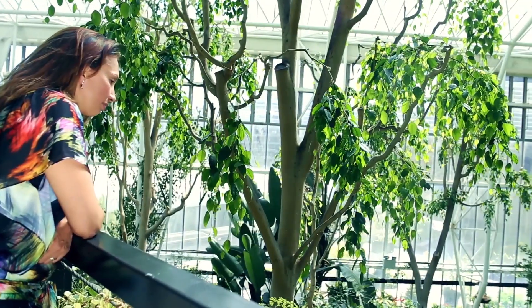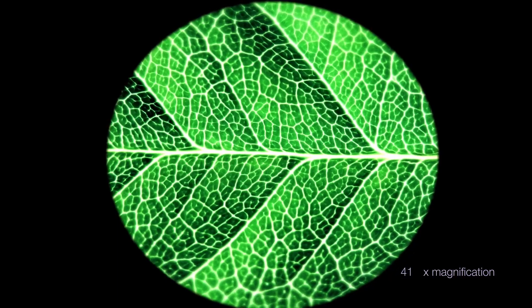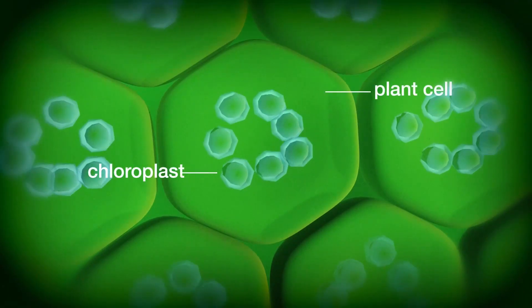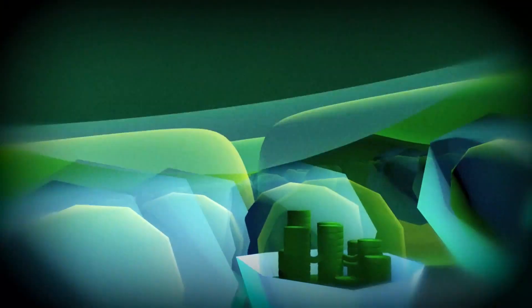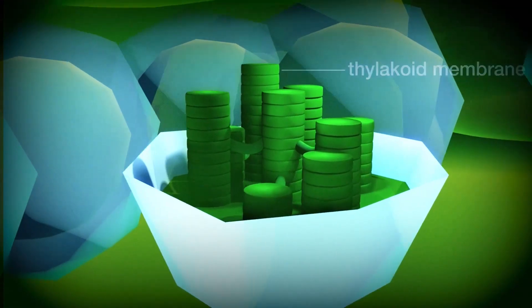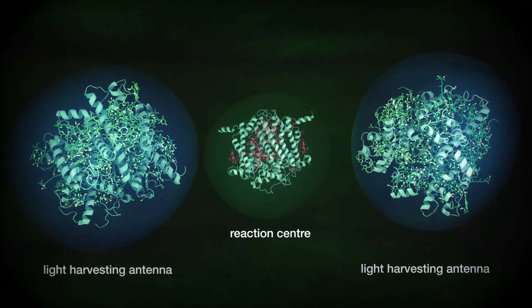It is not surprising then that scientists have been investigating nature to understand the strategies it uses to convert solar energy. The key to photosynthesis lies deep in the cell membrane, at the nanometer scale, where we find the molecular machinery for light harvesting, where quantum mechanics rules.